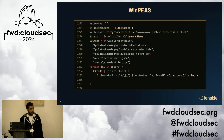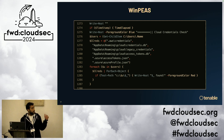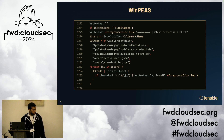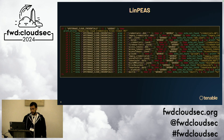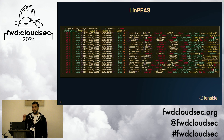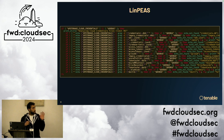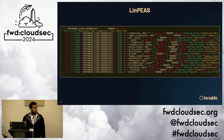In WinPEAS, the script searches for specific paths and files related to AWS credentials, gcloud, Azure, and so on. LinPEAS has even more files and locations. While these tools were not built specifically for cloud pivoting, they give the opportunistic attacker the chance to do so. The threat is real — the tools are out there and available, and attackers are already taking advantage of them.